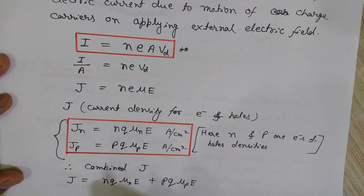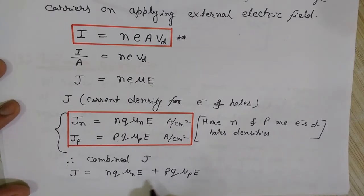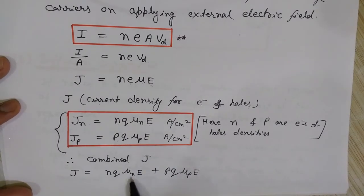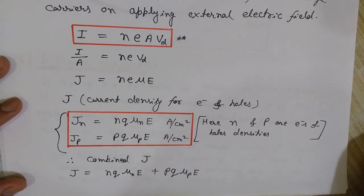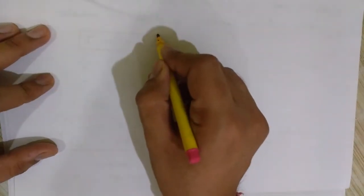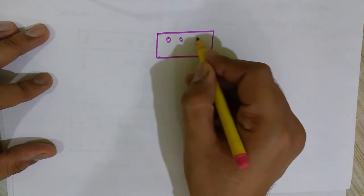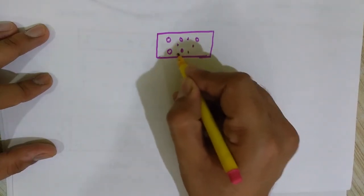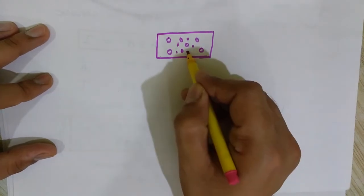To find the combined current density in the semiconductor due to both charge carriers, we add them together. Let me explain why they add: consider a semiconductor with holes and electrons. We apply an electric field in one direction.